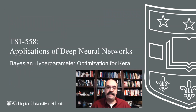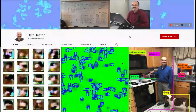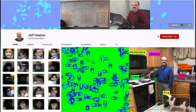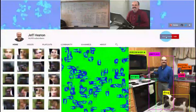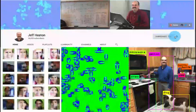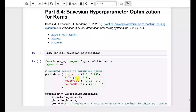Hi, this is Jeff Heaton. Welcome to Applications of Deep Neural Networks with Washington University. In this video, we're going to look at how you can use Bayesian optimization to tell you how to architect your neural network. For the latest on my AI course and projects, click subscribe and the bell next to it to be notified of every new video.